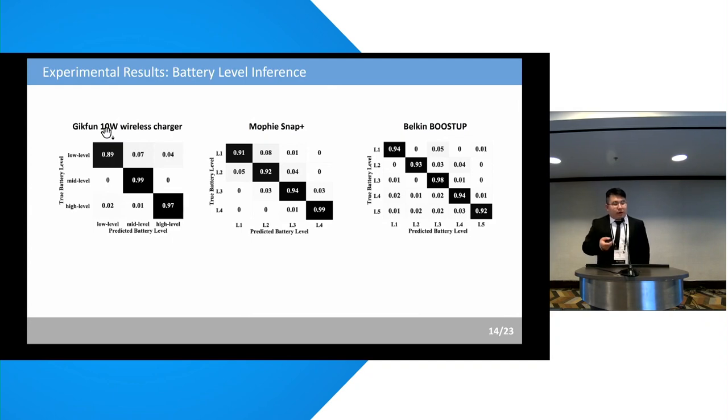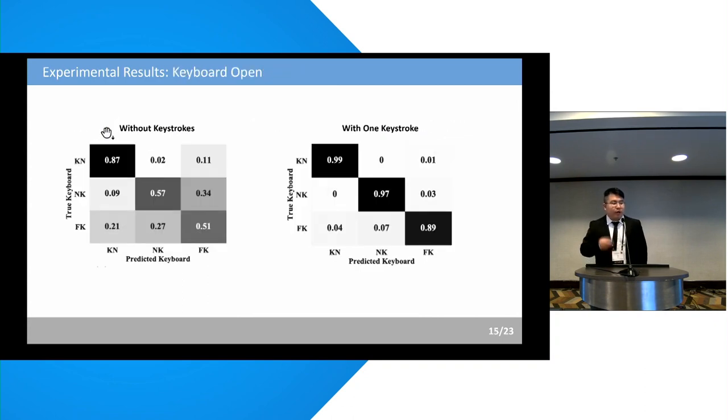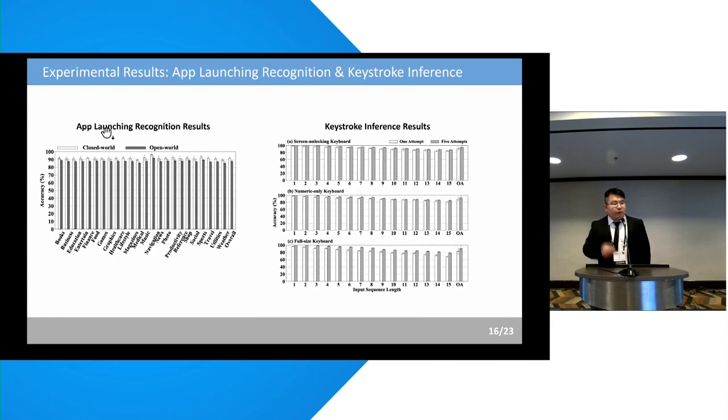Our evaluation results show that WISERS achieves over 94% accuracy in battery-level inferences with commodity wireless chargers that present three, four, and five battery-levels when charging an iPhone 13 Pro. And also, it achieves over 95% accuracy in keyboard open detection with one keystroke input. And also, for the app-launching recognition, it achieves 91% accuracy and 87% accuracy in closed-world and open-world app recognition, respectively. And also, for the keystroke inference results, it achieves over 90% within five attempts of the three keyboards.